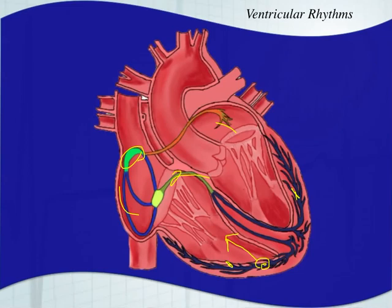This is not a desirable rhythm to be in because with the ventricular rhythm, they can become very fast, so you won't have a whole lot of stroke volume. Your stroke volume will also be depleted because you lose that synchronization between the atria and the ventricles — where the atria fully contract and eject blood into the ventricles, and then the ventricles send that blood out to the lungs and body. You don't have that effectively with a ventricular arrhythmia.